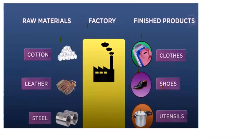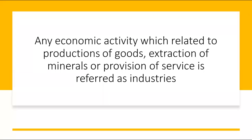The factories which make these products have machines, tools and human resources to turn raw material into finished products. The goods are then sent into the markets and purchased by people. Any economic activity related to the production of goods, extraction of minerals, or provision of services is referred to as industries.